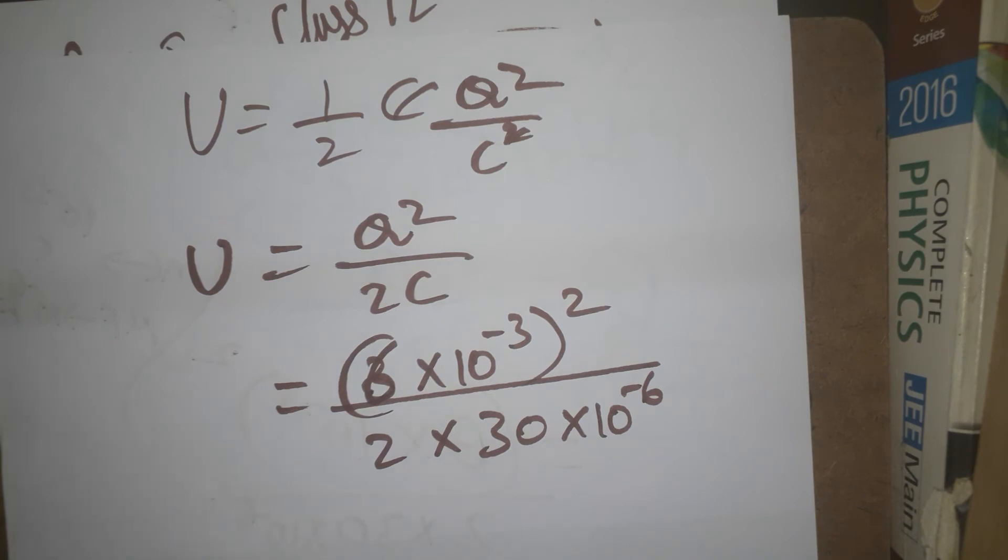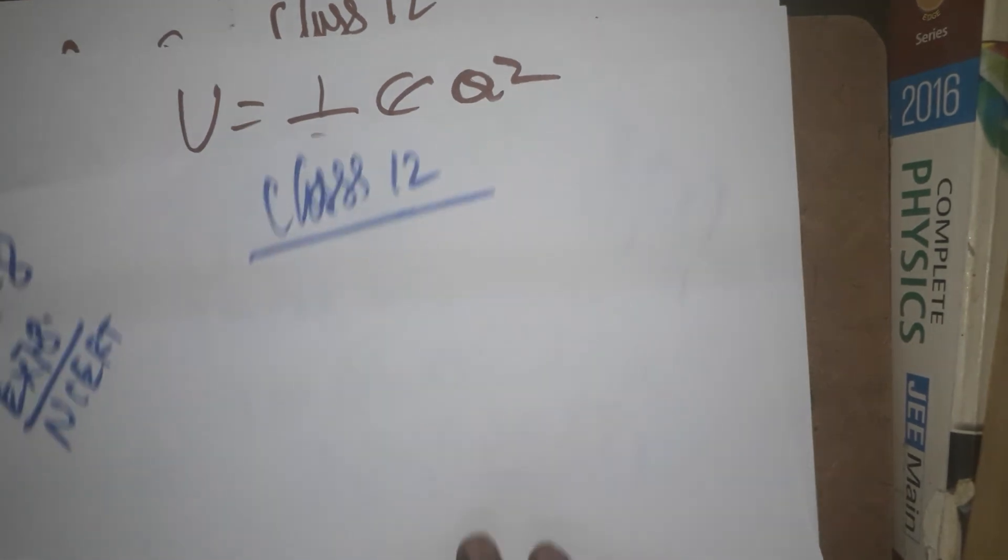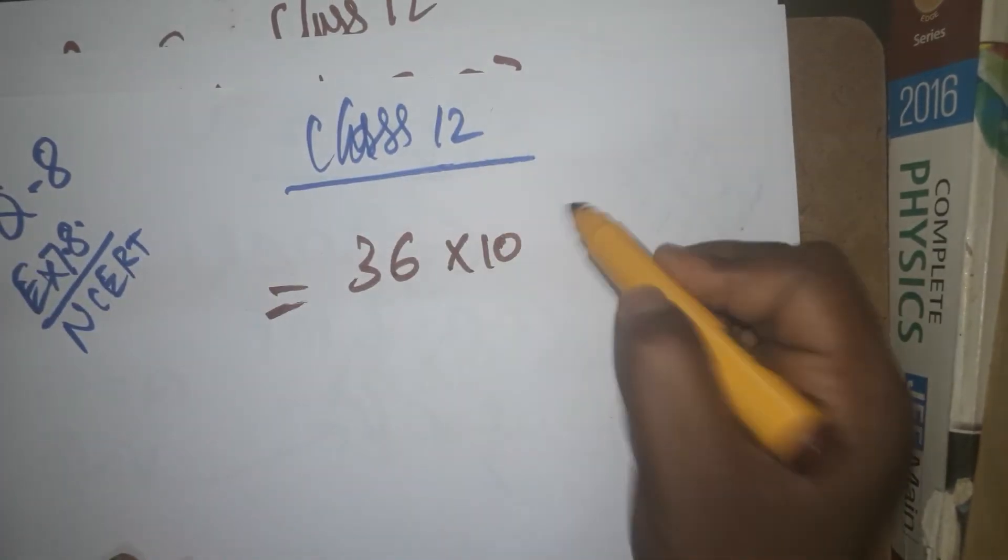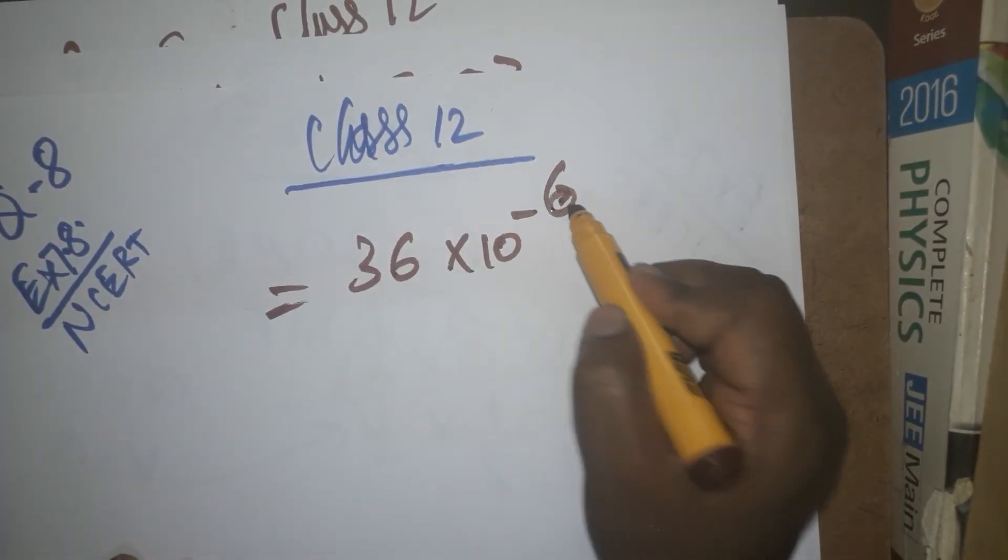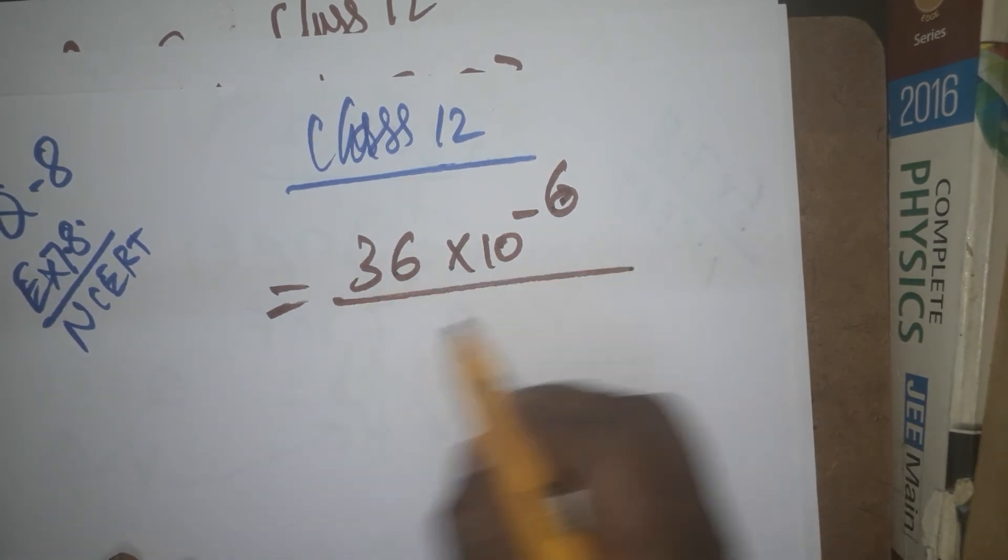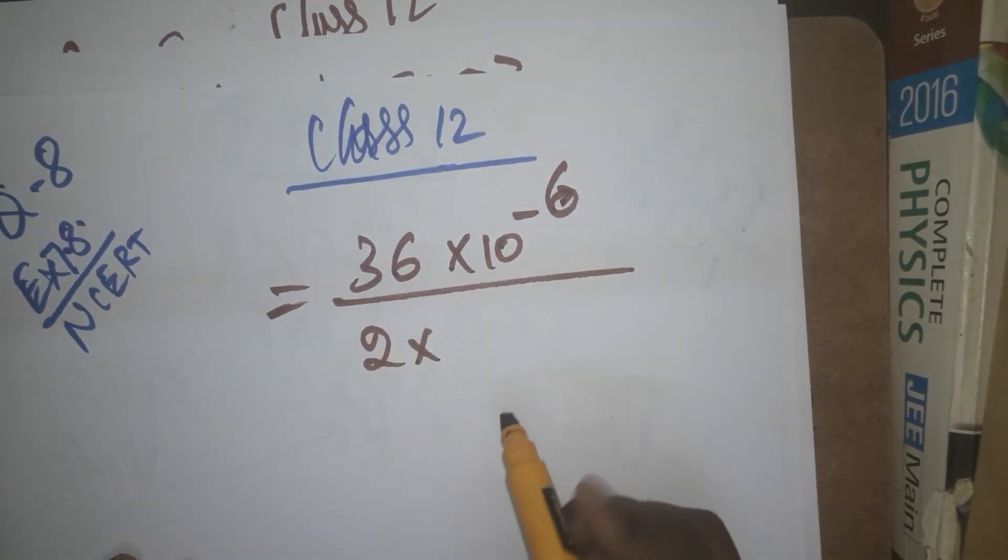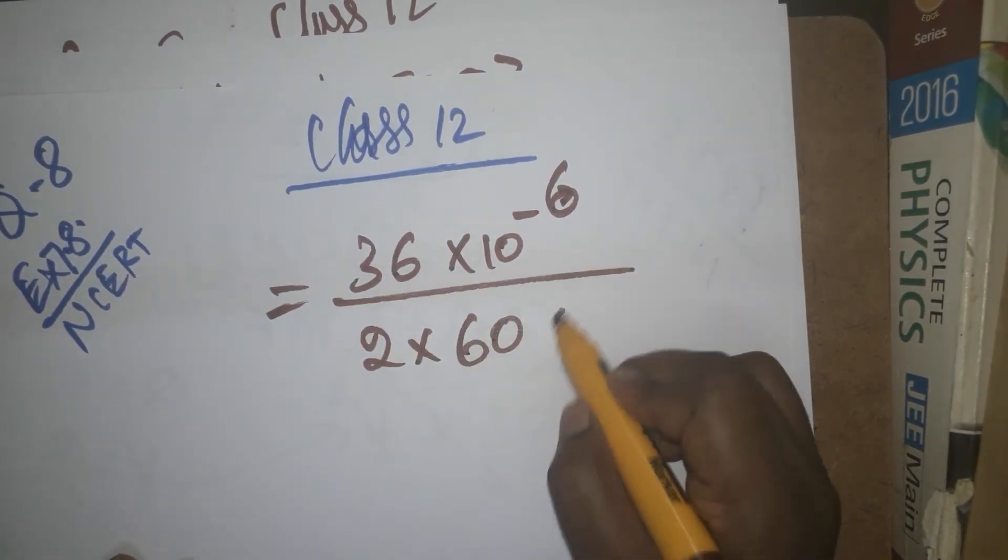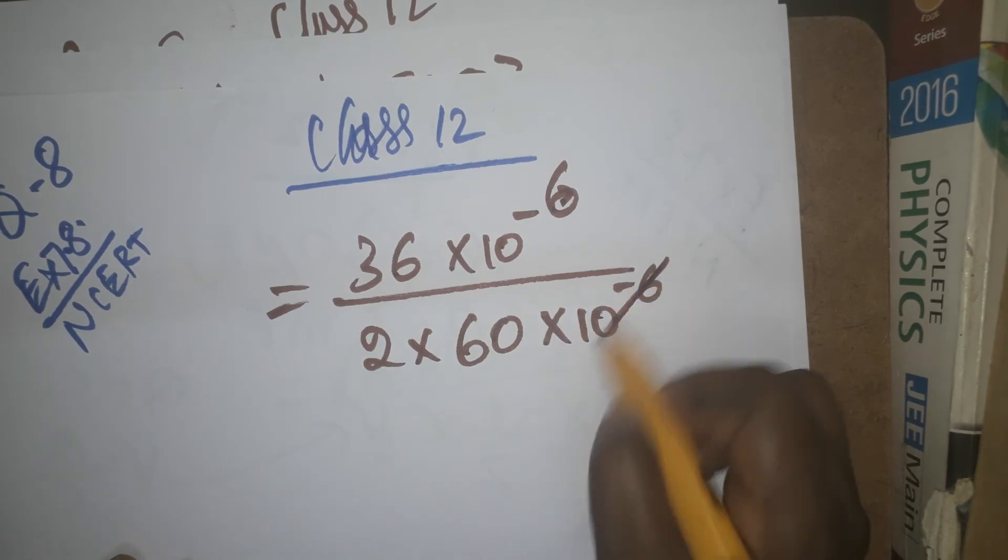6 squared equals 36, and (10^-3)² = 10^-6. So the numerator is 36×10^-6. The denominator is 2×30×10^-6 = 60×10^-6. The 10^-6 terms cancel.